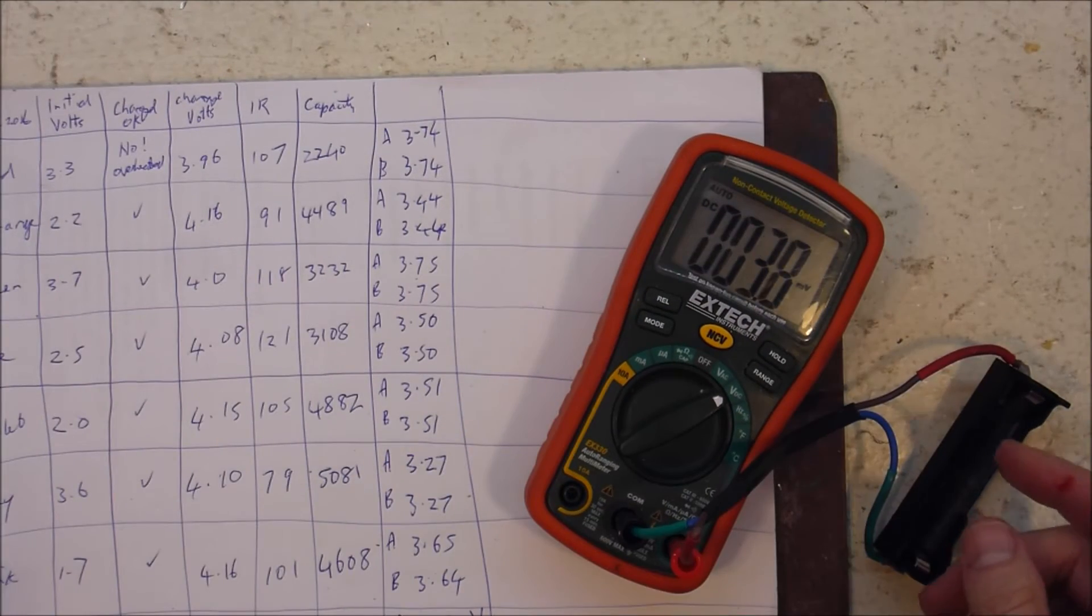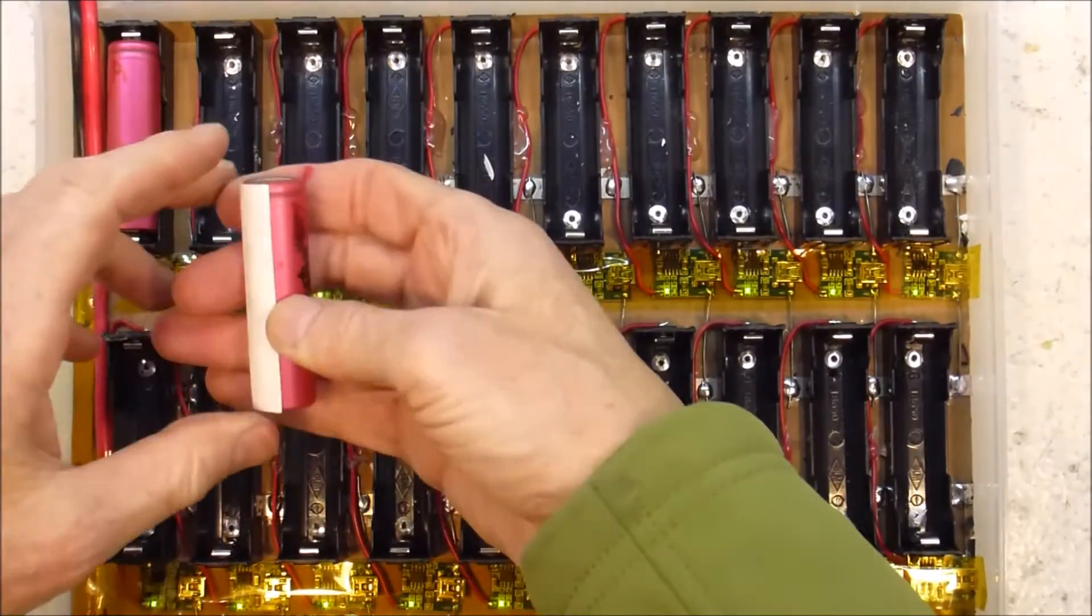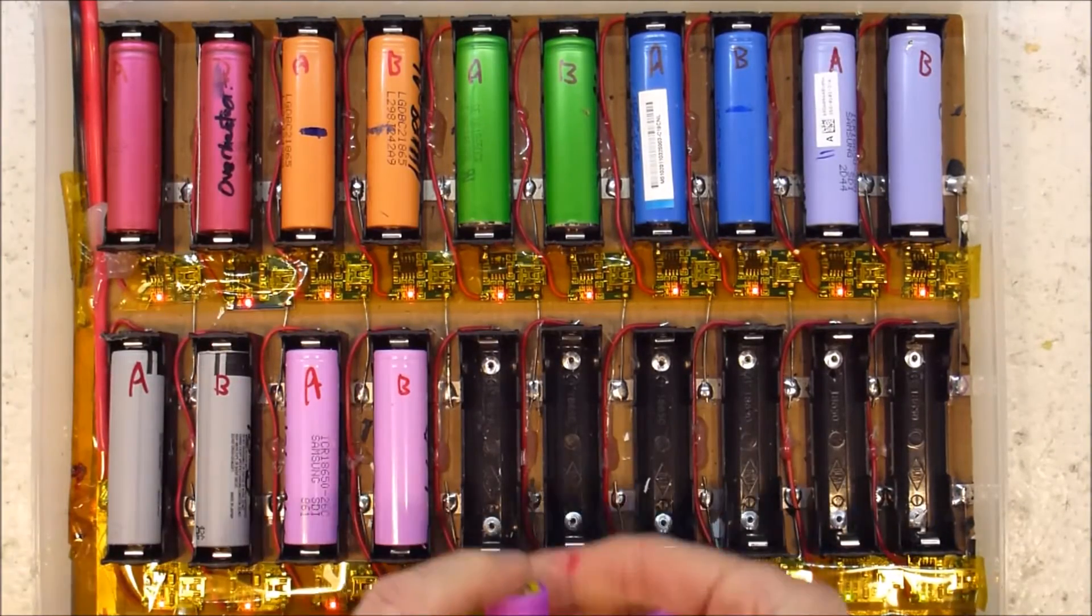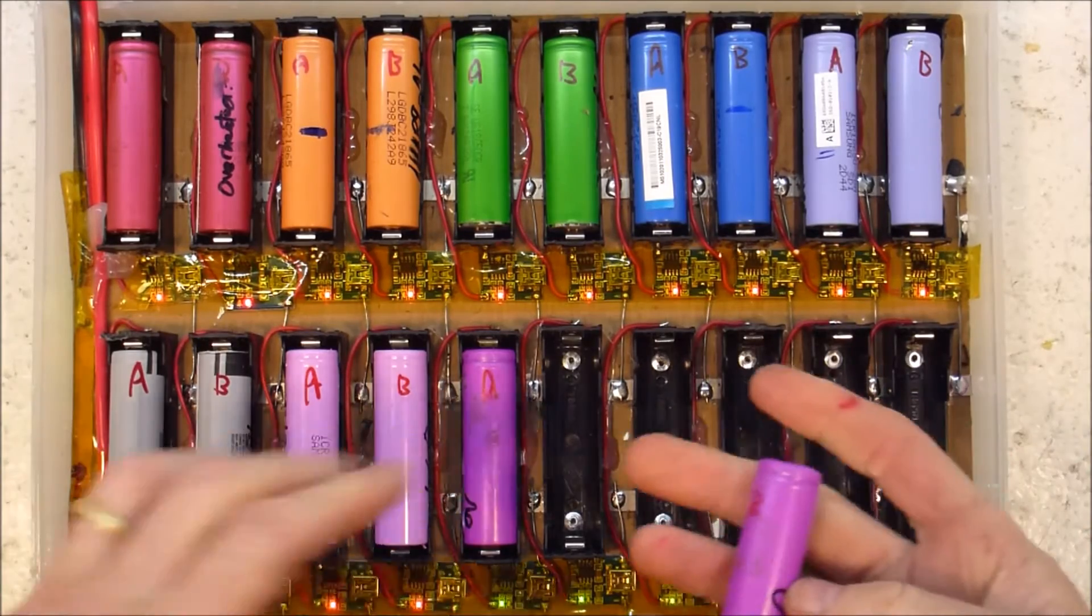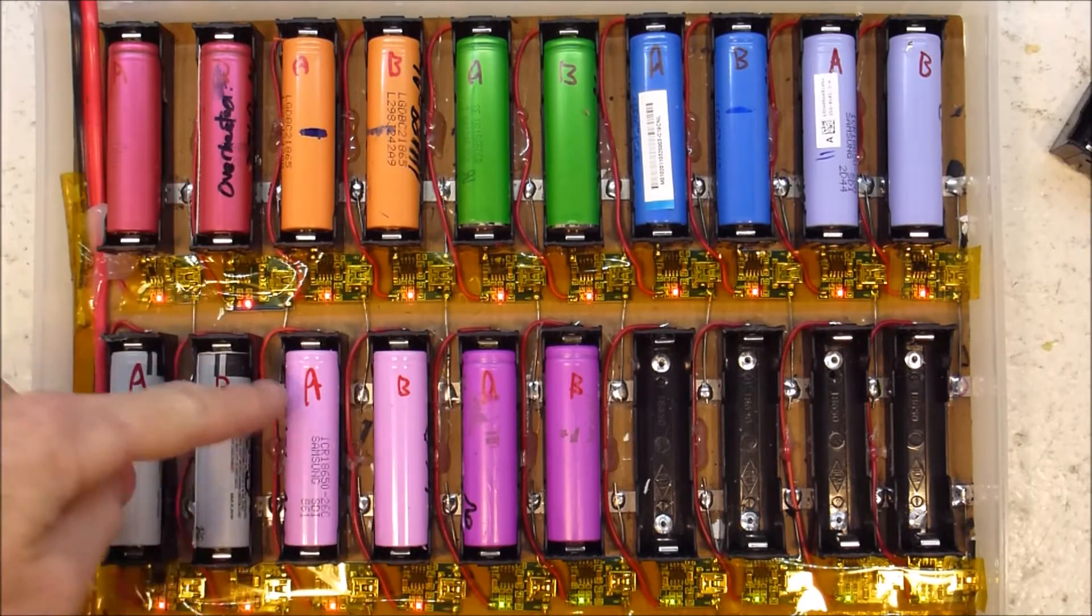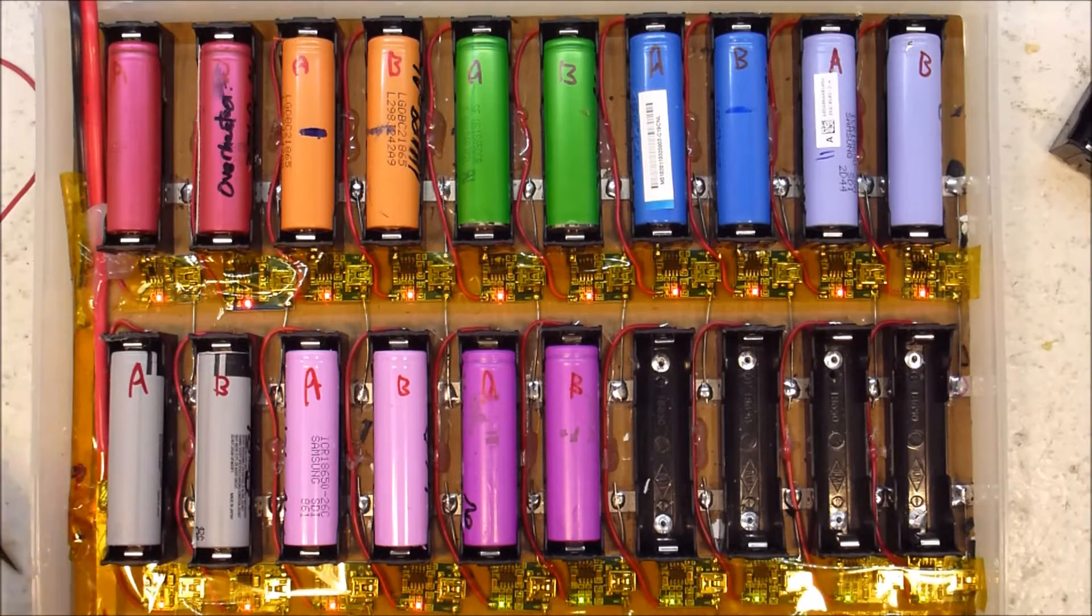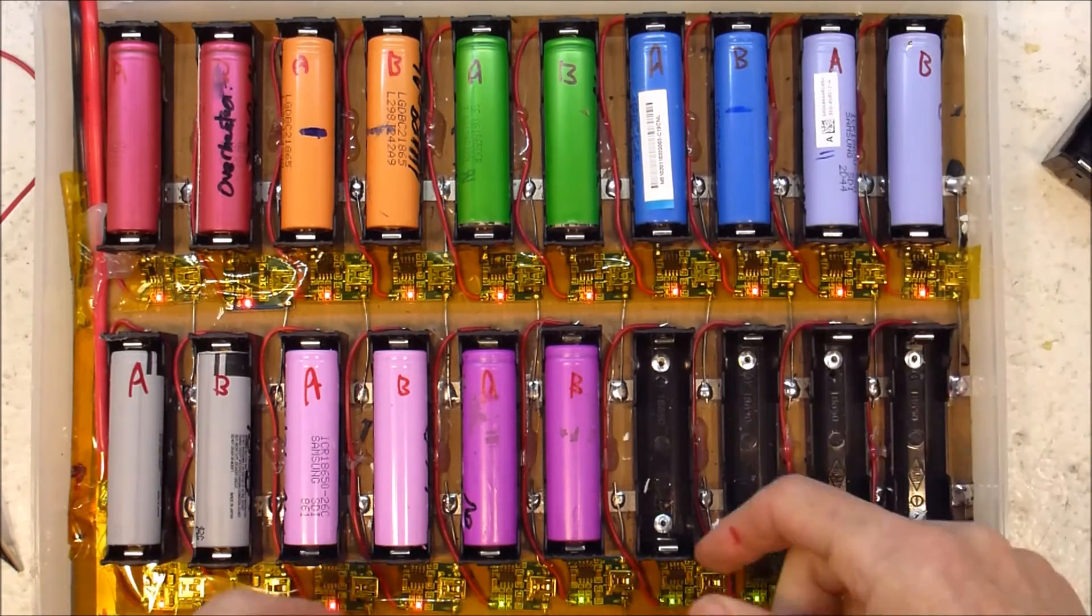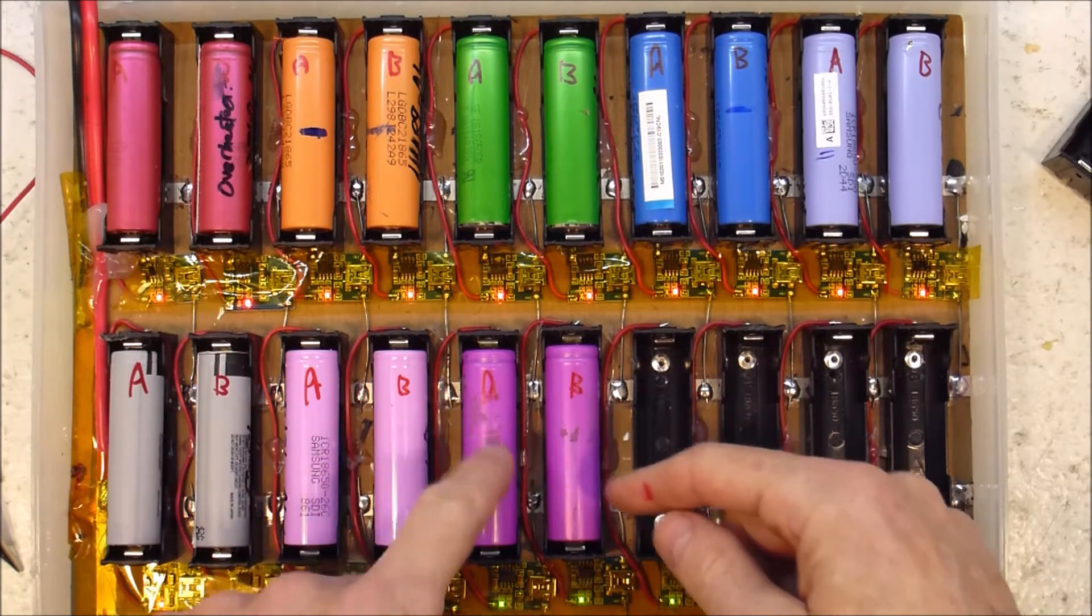The next step is to charge all those up. That's charging. And let's see what happens here. Nope. Nope. So these are all fine. These two that were refusing to charge previously are still refusing to charge. So once again I'm going to try the process whereby you zap it with a good cell.